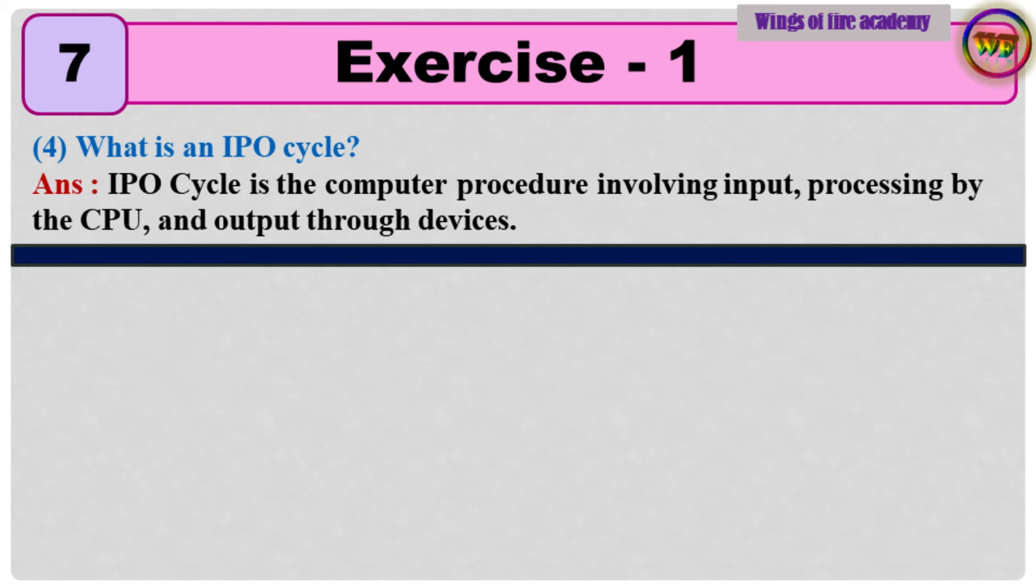4. What is an IPO cycle? Answer IPU cycle is a computer procedure involving input, processing by the CPU, and output through devices.